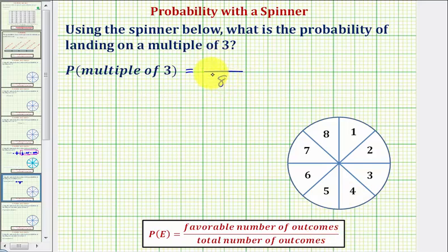And now to determine the favorable number of outcomes, we want to determine how many of these are multiples of three. So three is a multiple of three. The next multiple of three would be six. The next multiple of three would be nine, but there is no nine.